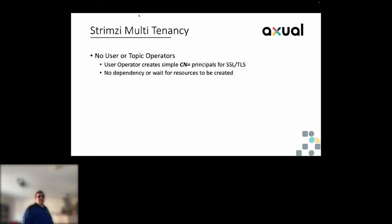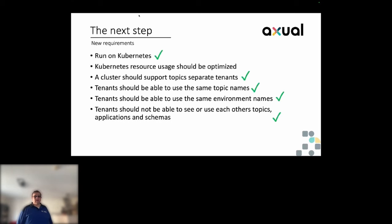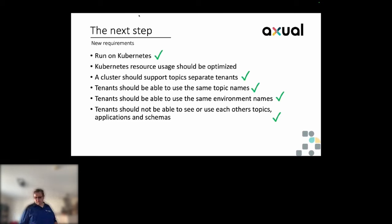We're now running on Kubernetes with a cluster that can support topics for separate tenants. They can reuse names and environment names because of the naming patterns, and they cannot see each other's topics because we generate all credentials and principal names and ensure they are unique per tenant and across tenants.